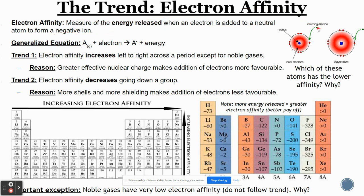Basically, electron affinity is kind of the opposite of ionization energy. You're adding an electron, and when you add an electron, the atom kind of pays you for that — it pays you in energy. So the idea is that the more energy the atom releases, the more likely it appreciated receiving that electron.